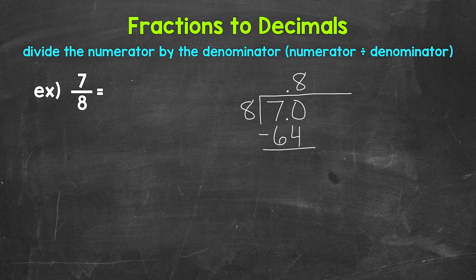Subtract 70 minus 64 is 6. So we don't have that clean cut zero there at the bottom. So we can continue on by using another zero that we can bring down. And now we have 60, 60 divided by 8. That's going to be 7.